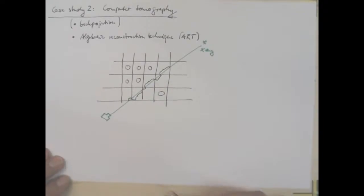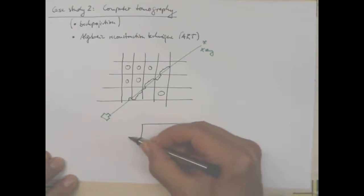And I can now compute for each ray to what extent it interacts with each of the pixels. So, this length here is the amount of interaction this ray has with this particular pixel. That is how much it interacts with this one. You get the idea. Whereas, I have zero interaction between this ray and a lot of other pixels. Now, this information I can collect in a matrix.